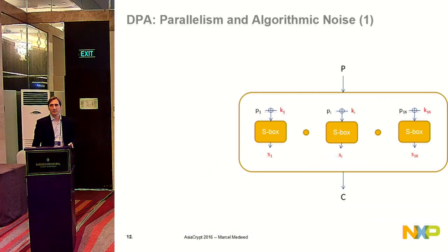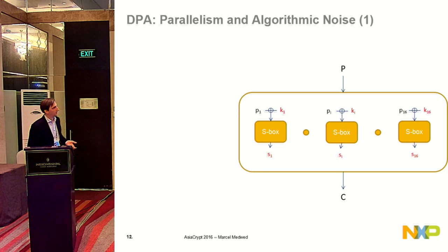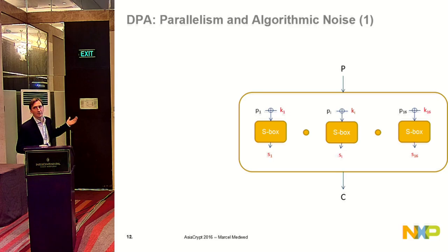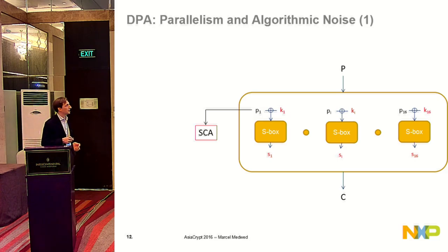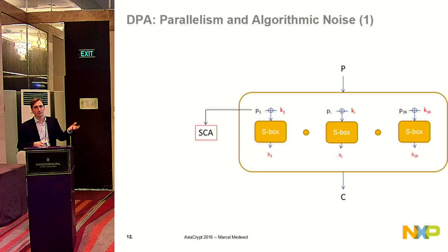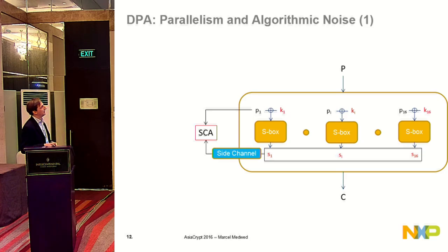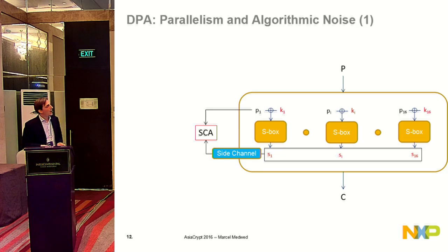Our construction works in a parallel setting, so I'll first talk about DPA attacks against a parallel implementation of AES. That means we have a plaintext input, ciphertext output, and inside everything goes on at the same time — for instance, the first S-Box layer: all 16 S-Boxes are evaluated at the same time. In an attack, we collect traces for many different plaintexts, make a key guess for a known plaintext byte P1, predict the output, and applying a leakage model we predict the leakage of the device under a certain guessed key. Having the actual leakage measured, we compare and decide which is the correct key.